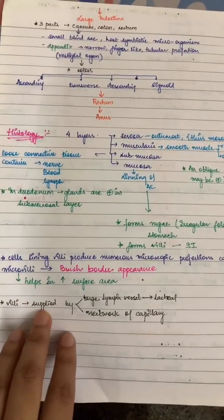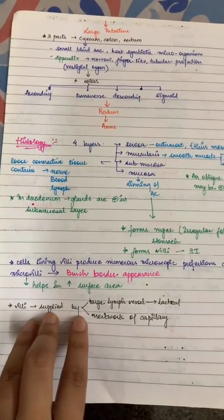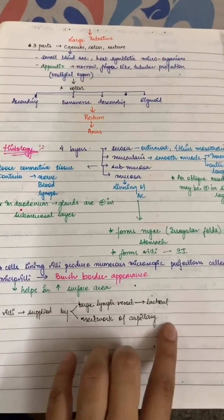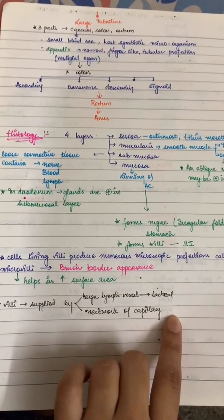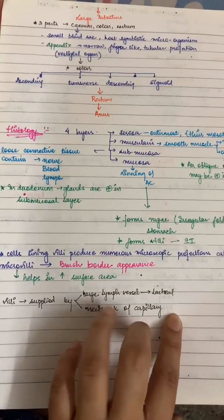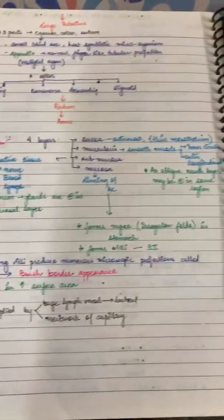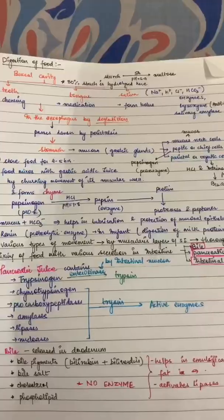The villi are supplied by large lymph vessels called lacteals, and they also have a network of blood capillaries. You will understand this better when you look at the diagram.